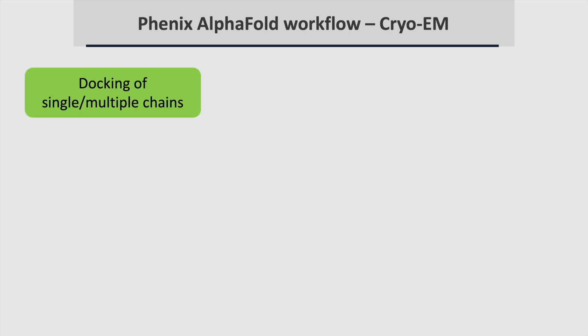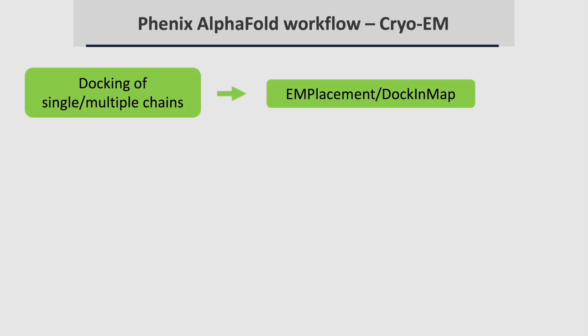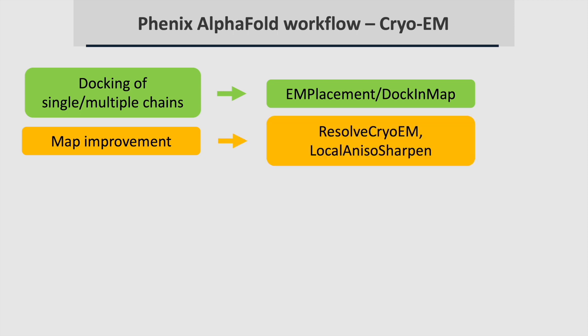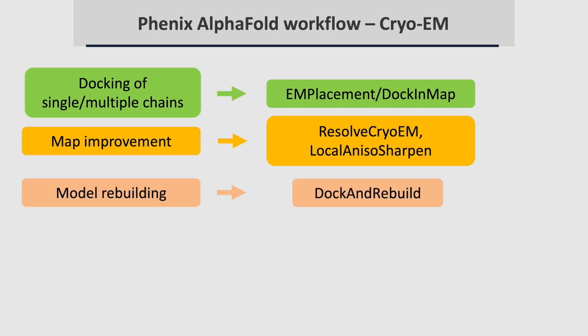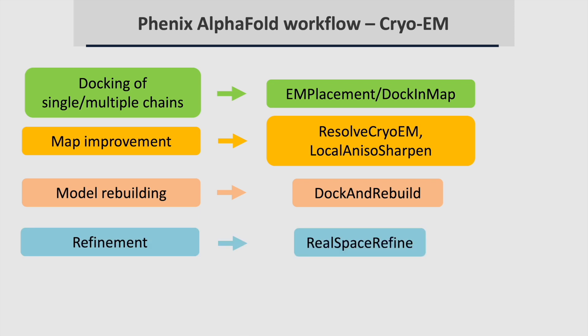If you have cryo-EM data, you can carry out docking of single chains with the likelihood-based EM placement tool, and multiple chains with the correlation-based Dock and Map tool. For map improvement, you can use Resolve cryo-EM for density modification or local aniso-sharpen for map sharpening. For model rebuilding, you can use Dock and Rebuild. And for refinement, you can use RealSpace Refine.